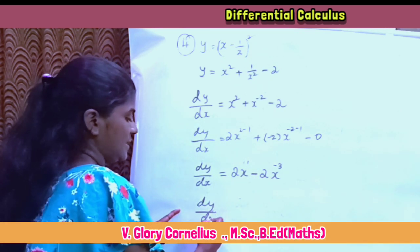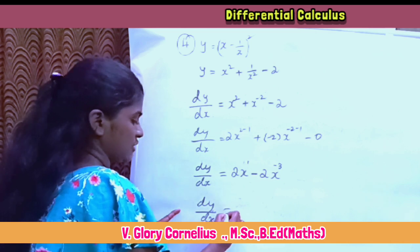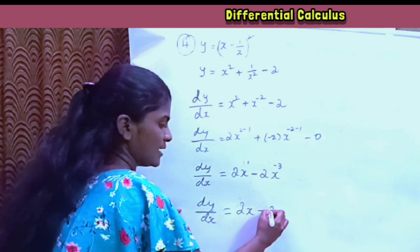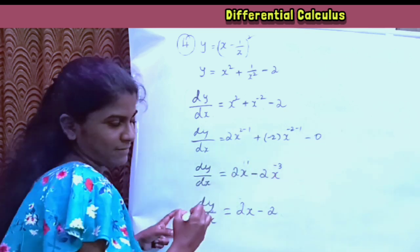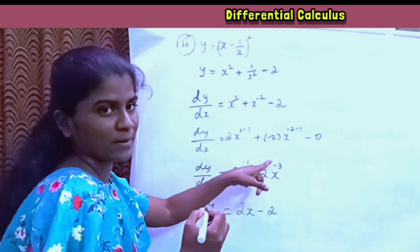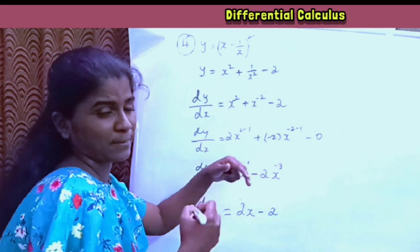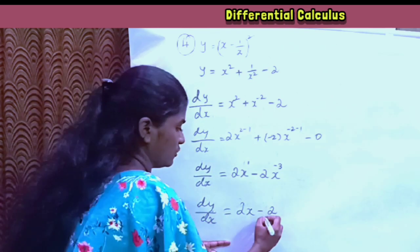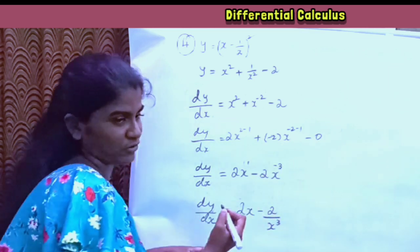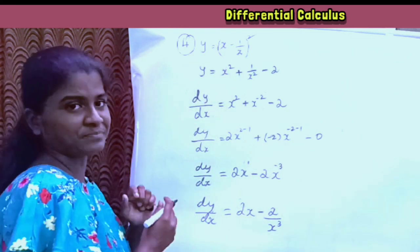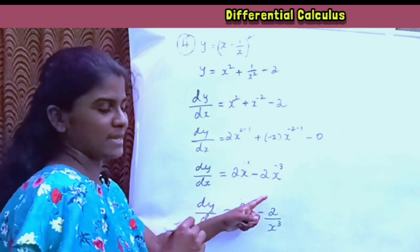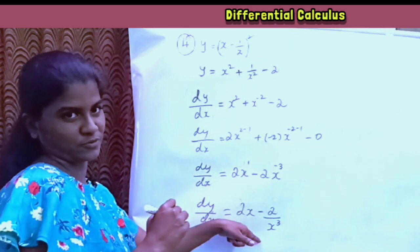dy divided by dx is equal to 2x minus 2 into x to the power of minus 3, which equals 2x minus 2 divided by x cube.